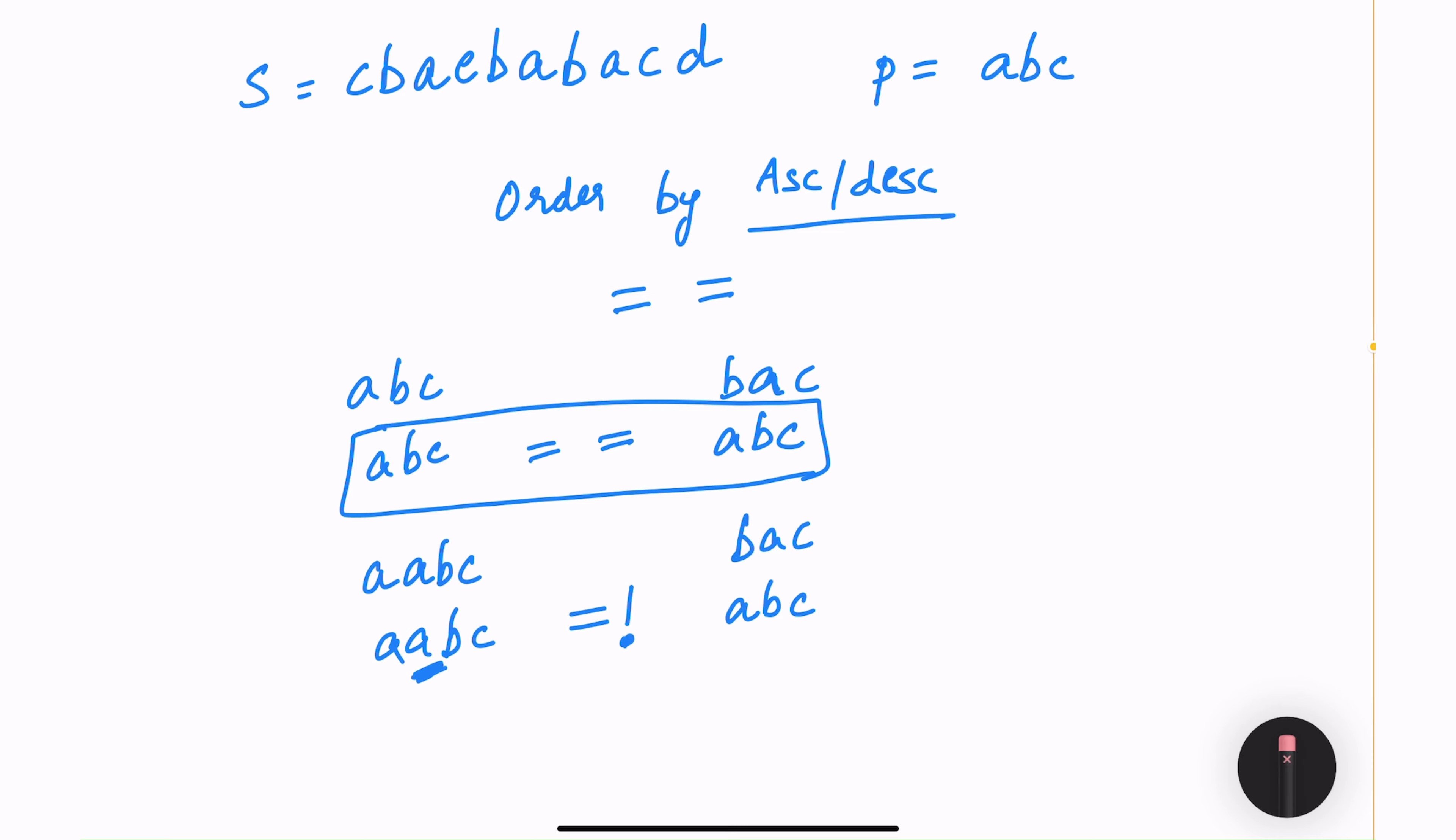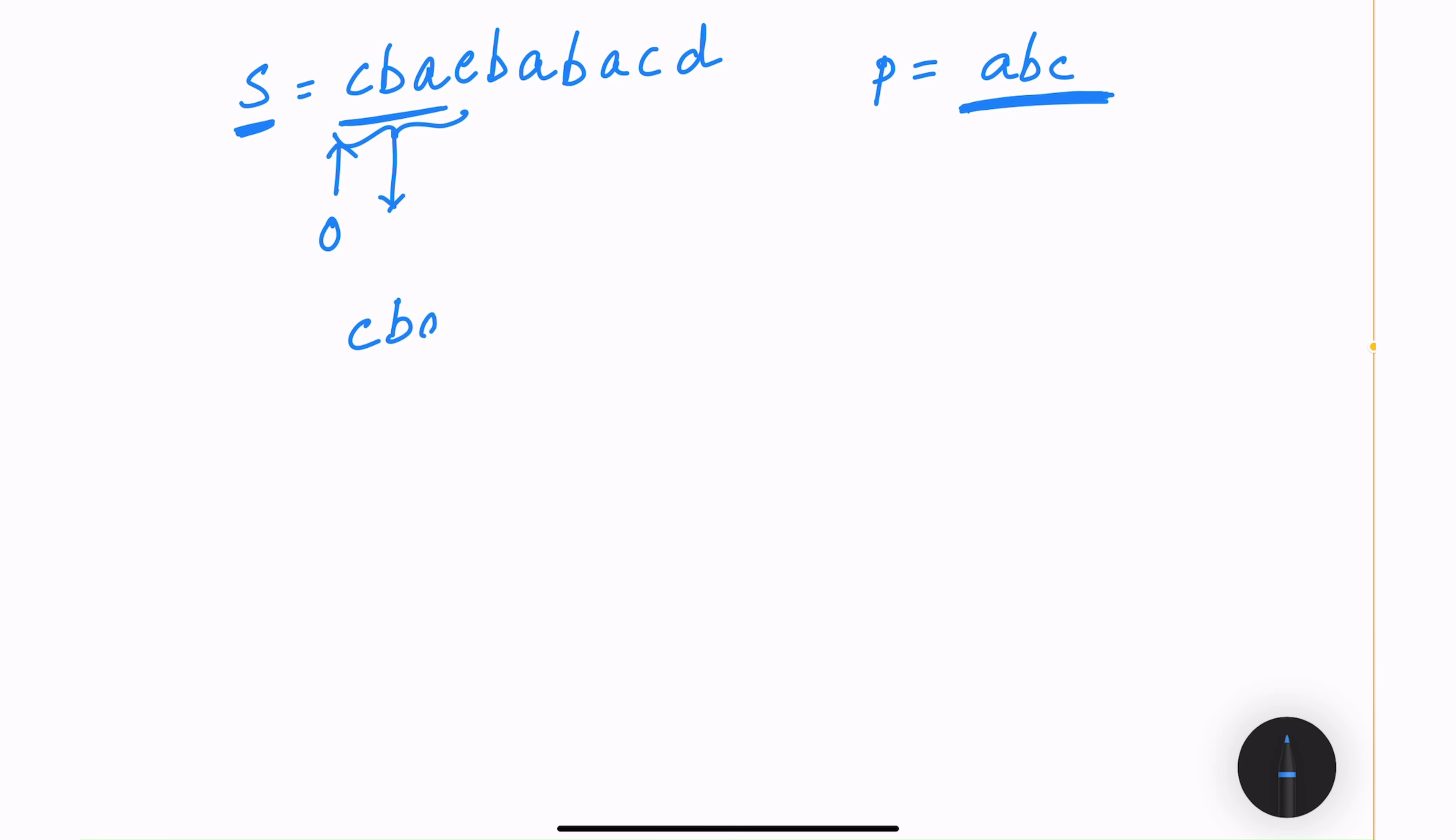To solve this problem using a simpler approach, we can use this sort by approach to compare the strings. Let me give you a couple of examples. Because the length of p is 3, the substring that I will be doing on the string s also needs to have 3 characters. So I will start with checking the first 3 characters. So my pointer is going to point at 0. I will get the first three characters c, b, a. Apply sorting which will give me a, b and c.